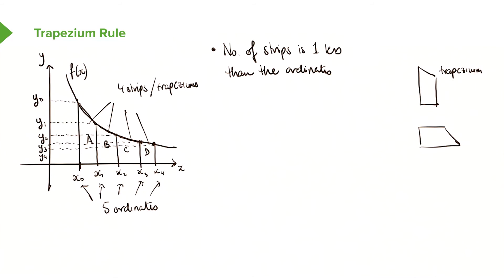Now we can look at each trapezium. For each trapezium we have the x ordinates and the associated y ordinates. Imagine I've split this big shape into equal parts — each part has a constant width, which we'll call h. Let me zoom in on one of the trapeziums. We're saying this width is h. For the first one, this is x0, this is x1. This value gives you y0 and this gives you y1. Now we can start to derive our trapezium rule: we find the area of each individual shape and then add them up.